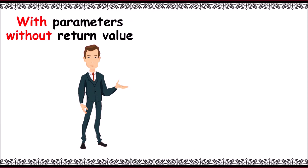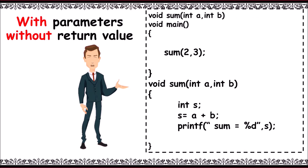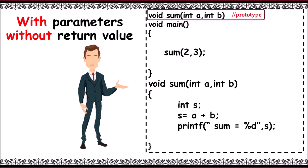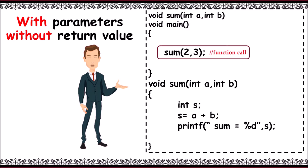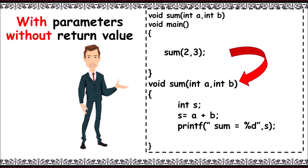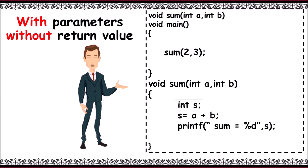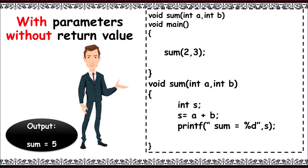The next example is with parameters and without return value. You can see a function named sum with parameters 2 and 3. You can also observe no return statement and the return type is void. The program starts with function prototype, then main, then function call sum(2, 3). Control goes to sum(int a, int b) — 2 is stored in int a and 3 is stored in int b. Then int s is declared to store the sum, s is equal to a plus b, and printf prints output: sum is equal to 5.